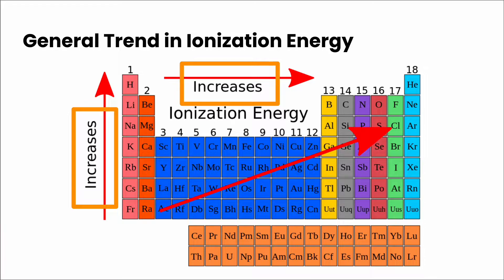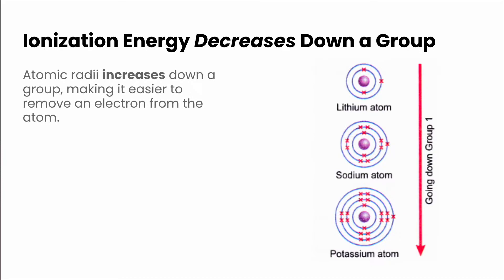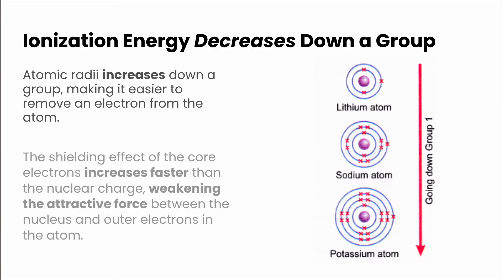Let's look at both of these trends and explain why this occurs. First, let's look down a group — ionization energy decreases down a group. That's because, as we saw in our last video, atomic radii increases down a group. When atomic radii increases, it makes it easier to remove an electron from the atom, because the shielding effect of the core electrons increases faster than the nuclear charge. This weakens the attractive force between the nucleus and the outer electrons, thus making it much easier to pull an electron off.